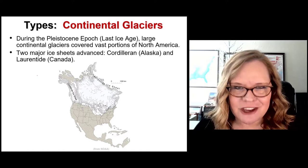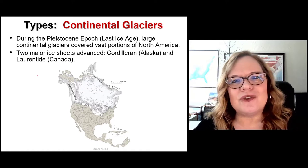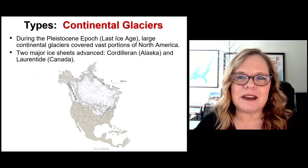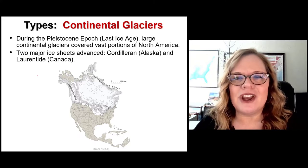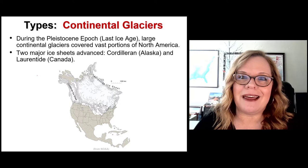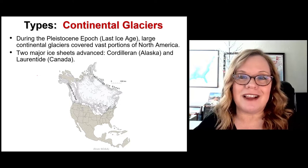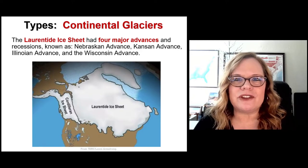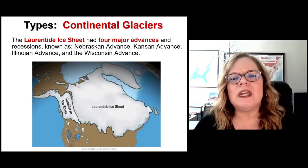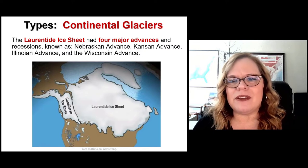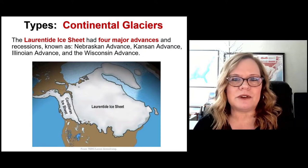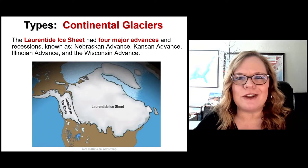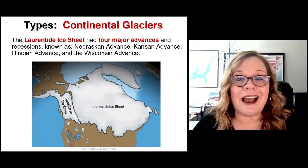These ice sheets didn't exist for one straight continuous period of time during the last ice age. They went through periods of accumulation and ablation — glacial episodes followed by interglacial episodes, which are warming sections. The Laurentide ice sheet had four major advances named after the states to which they most southerly traveled: the oldest was the Nebraskan, followed by the Kansan, the Illinoisan, and then the youngest — probably most significant — the Wisconsin ice sheet.